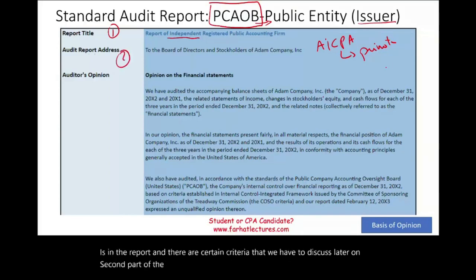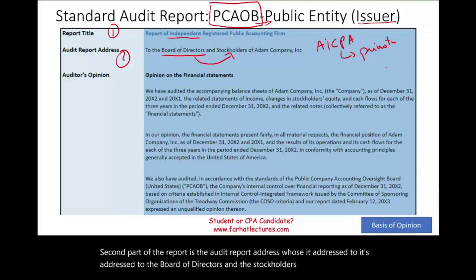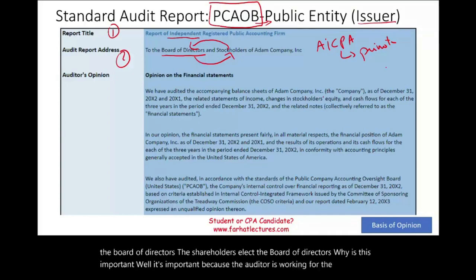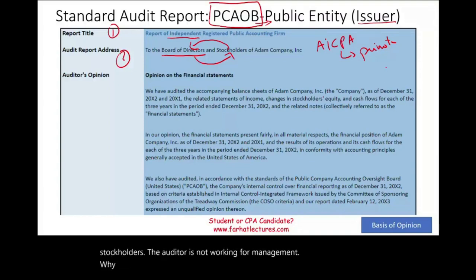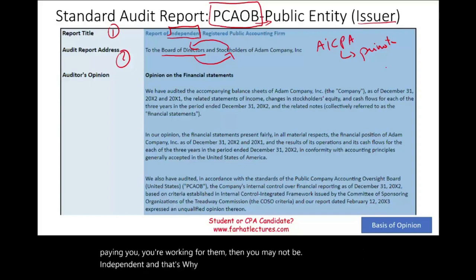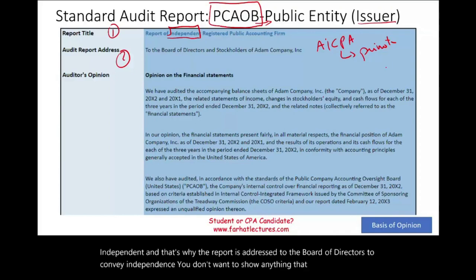The second part of the report is the audit report address. It is addressed to the board of directors and the stockholders of Adam Company. The stockholders elect the board of directors. This is important because the auditor is working for the stockholders, not for management. If you are passing judgment on management's work while they are paying you, you may not be independent. That's why the report is addressed to the board of directors — to convey independence.